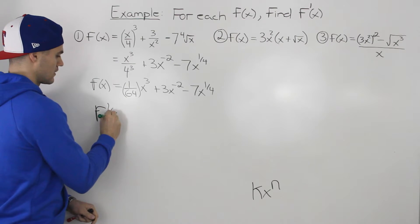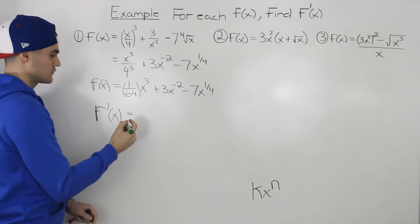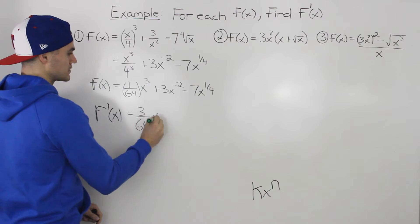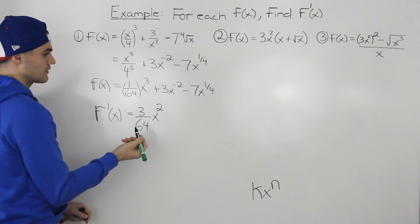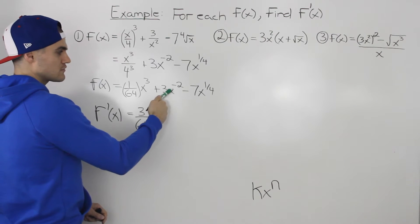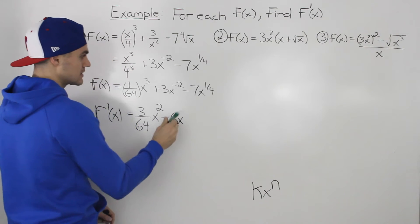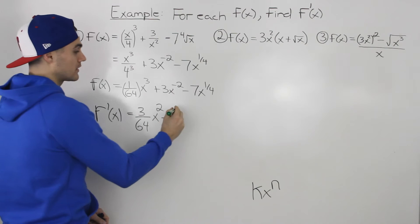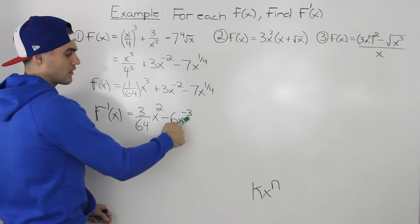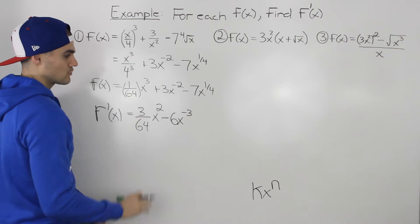Applying the power rule: for the first term, bring the 3 down — 3 times 1/64 gives 3/64 — and subtract 1 from the exponent, leaving x². For the second term, bring the negative 2 down: 3 times negative 2 gives negative 6, and negative 2 minus 1 gives negative 3. So that term becomes negative 6x⁻³. Be careful with the sign: it's negative 2 minus 1, not positive 2 minus 1.